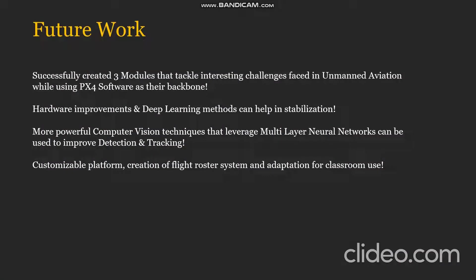Future work. In this final year project, we have seen the creation of three modules that revolve around the PX4 software and tackle various challenges faced in the unmanned aviation industry. We have also created a software report based on the PX4 documentation, providing a concise overview of the various high-level concepts and the setup needed to use this software for development purposes. One improvement for Module 1 is to improve the hardware and also employ deep learning methods that can help in stabilization. For Module 2, which deals with the object tracker and detector, we can improve the computer vision techniques used and leverage multi-layer neural networks that can help improve the tracking system.